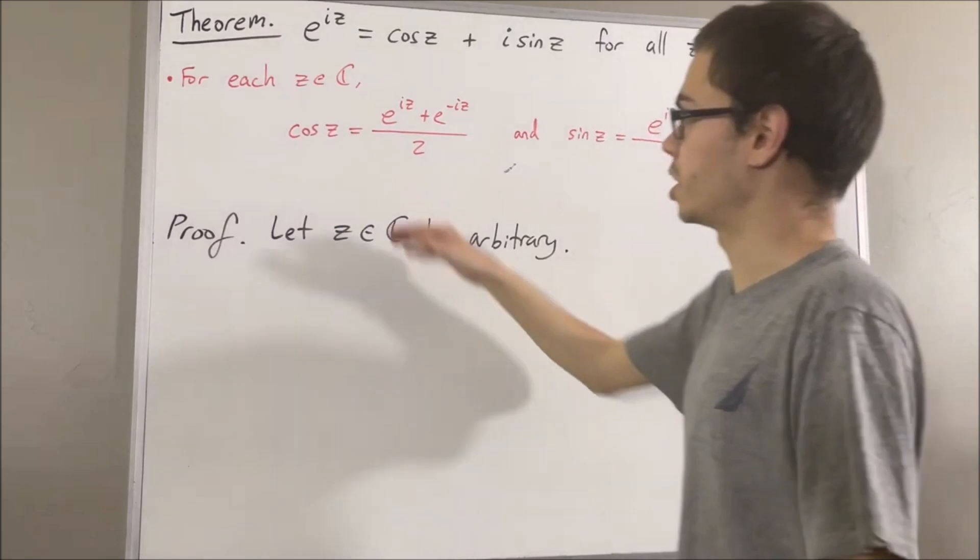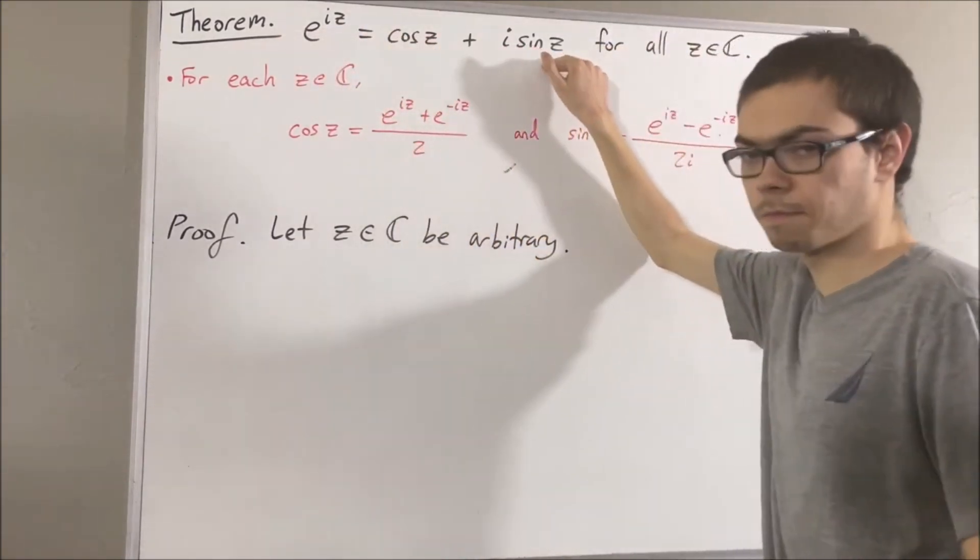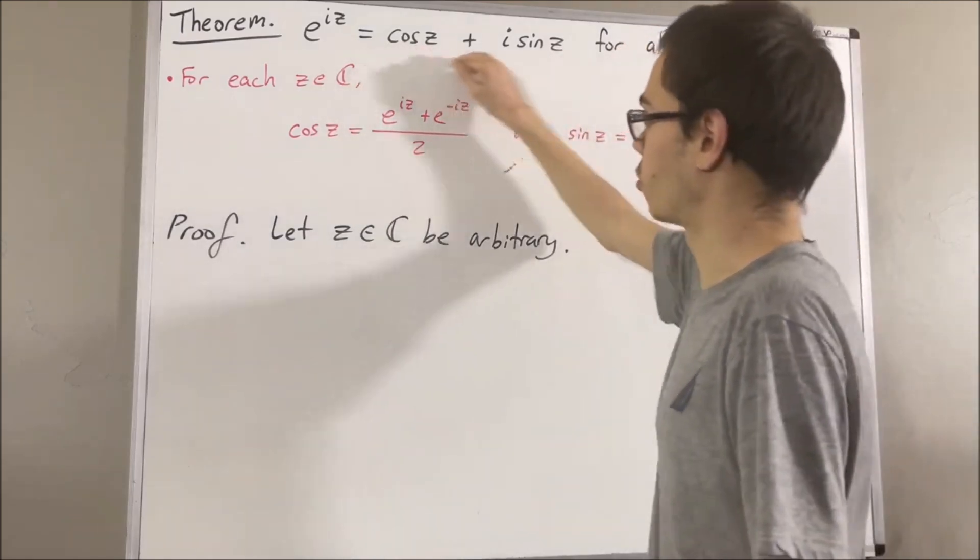From here, the whole goal is to show that e to the iz is equal to cosine of z plus i sine z. Well, let's start out by writing the right-hand side.